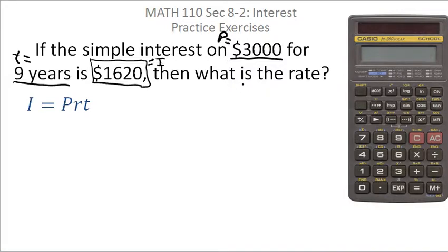So this time, we're solving for little r, not capital I as in the previous problem. So if we plug all this in, we'll get 1620 equals 3,000 times the unknown r. We'll just leave r in there. Times t, which is nine.